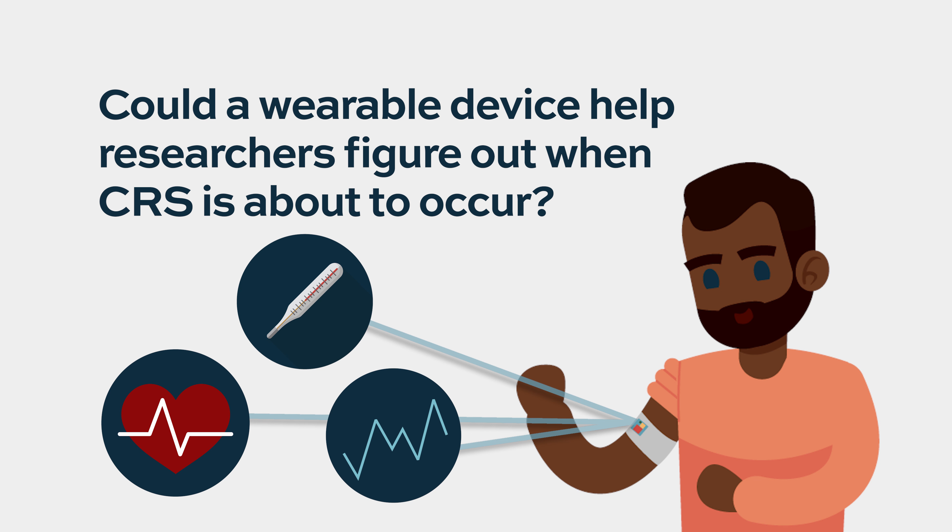Figuring out who's going to get CRS early and acting accordingly is an active area of research. Perhaps wearable probes will help us — maybe with a wearable patch, we will detect that the day before the fever the patient's temperature is trending upward without yet hitting 100.4°F or 38°C, and we can act on that earlier. We don't know yet if that's the correct approach, but hopefully five to ten years from now we'll get there.